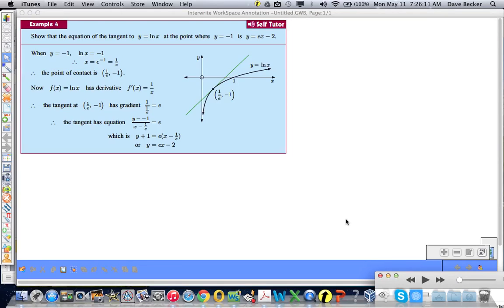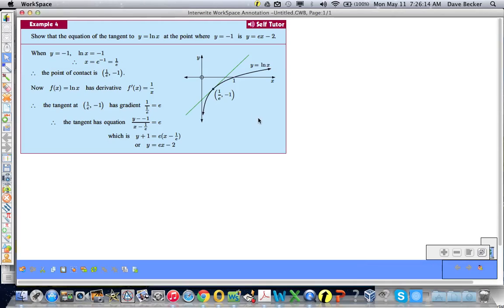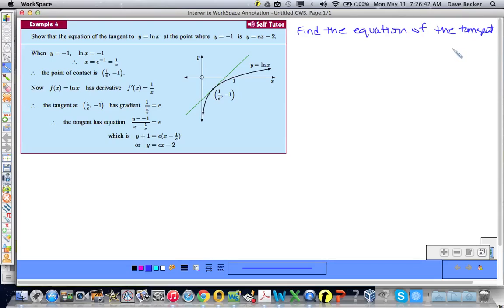Show that the equation of the tangent to y equals the natural log of x at the point where y equals negative 1 is y equals e x minus 2. So really, they're saying find the equation of the tangent. Remember the tangent is a line, boys and girls, so we're just finding the equation of a line, a specific line, the tangent line. Find the equation of the tangent to the natural log of x where y equals negative 1.